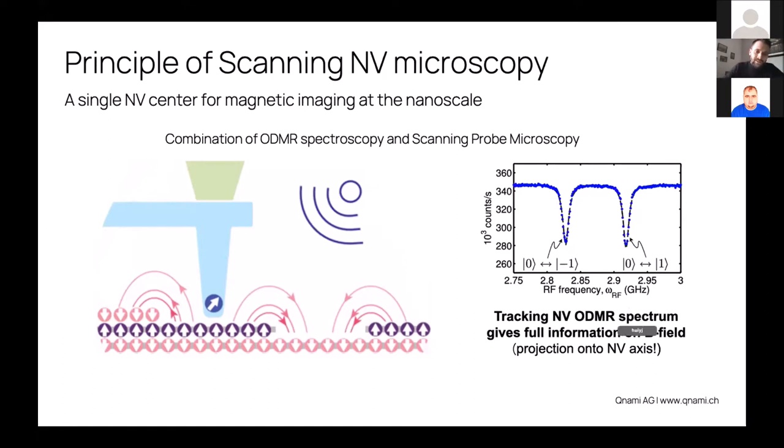We record an ODMR spectrum for each pixel and reconstruct a full image of the magnetic field over that surface. Now having a single NV center of high quality, precisely located at the end of an AFM tip, is not an easy thing. It's been an active field of research.